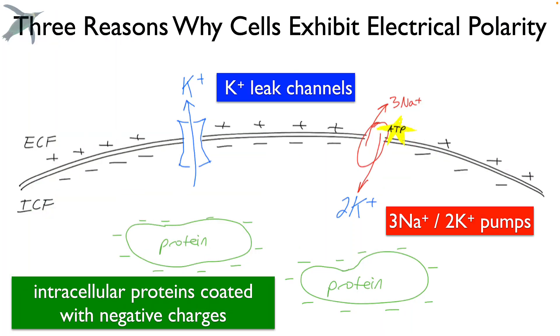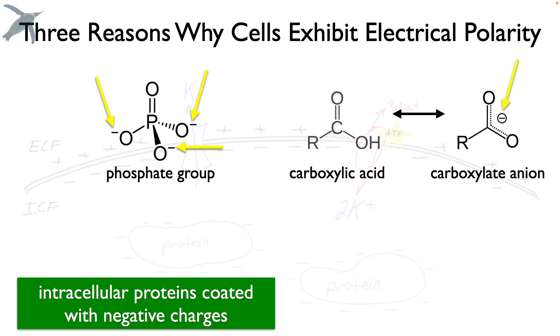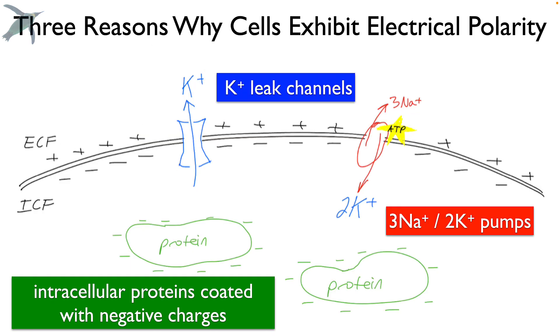The third reason why cells exhibit electrical polarity is because of the presence of negative charges that coat most intracellular proteins. This actually helps proteins not to stick together. Phosphates and carboxylic acids are great examples. So because these proteins are concentrated inside the cell, that also contributes to the inside of the cell being more negative with respect to the outside.